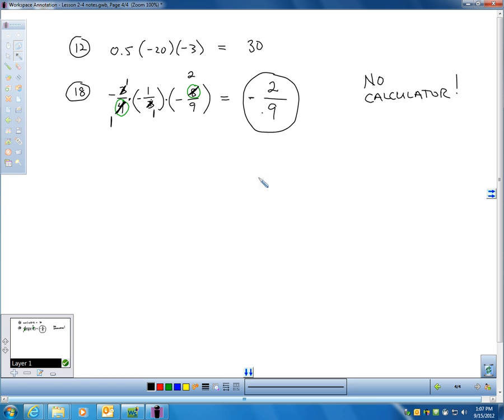You'll notice in numbers 19 to 27, they will ask you to identify the property illustrated. I'm asking you to just tell me what kind of property or what property that is. Like in number 19, that has to be the multiplication property of 0. I'm taking anything times 0 is 0. There's an example of that.